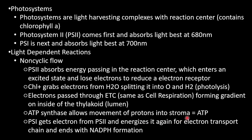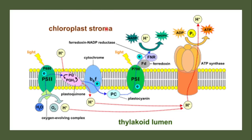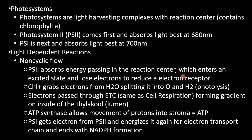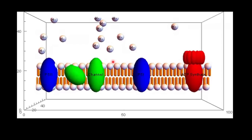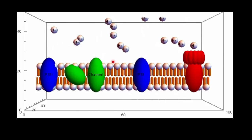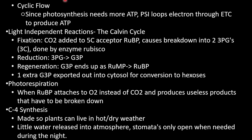ATP synthase allows movement of protons (H+ ions) into the stroma. The lumen is inside the thylakoid membrane and the stroma is outside. Photosystem I receives electrons from Photosystem II, energizes them again through the electron transport chain, and ends with the formation of NADPH — converting NADP+ to NADPH. In cyclic flow, since photosynthesis needs more ATP, Photosystem I loops electrons through the electron transport chain to produce additional ATP.